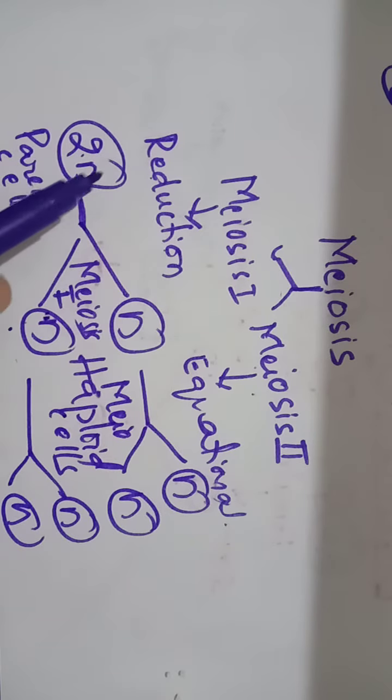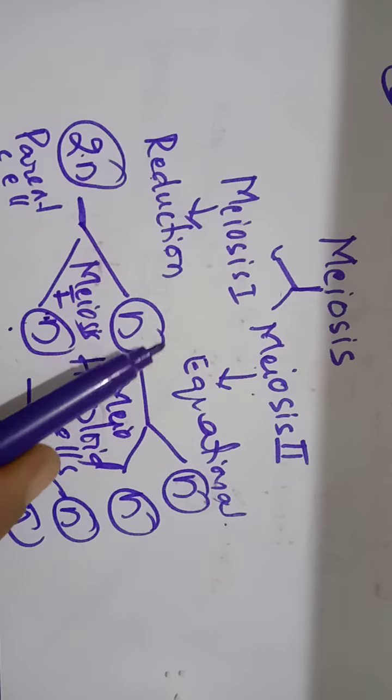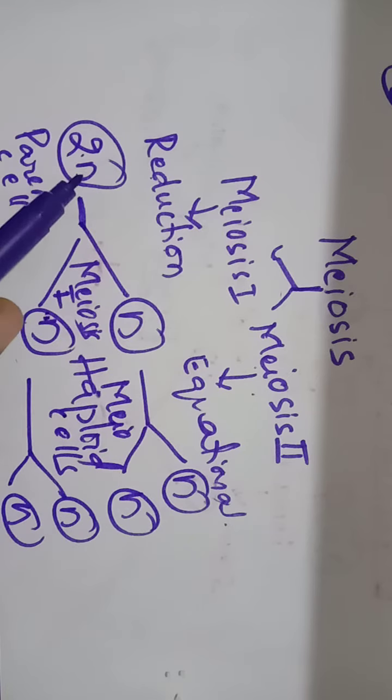At the beginning, it is 2n chromosomes. In the daughter cells, at the end of meiosis 1, two n cells are formed. 2n has become individual ns. This is in meiosis 1.